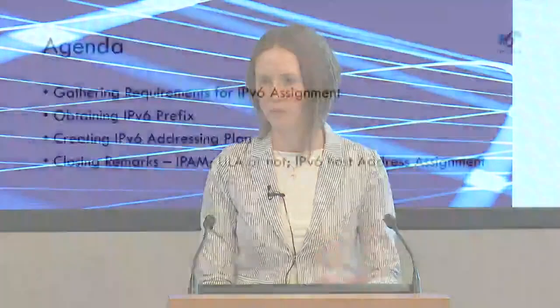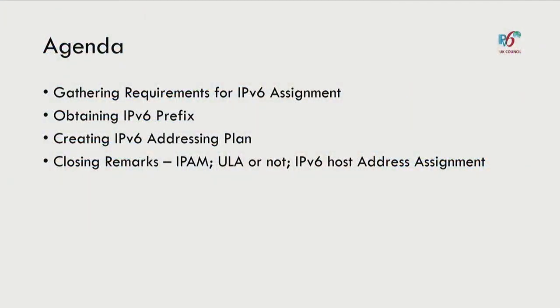So, address planning. Besides retraining your staff — one of the first things you need to think about — for your deployment or even the pilot, you need to allocate or assign some addresses. This talk is only 30 minutes. I used to do a Cisco Live presentation that was 90 minutes with an exercise for over 300 people. In this one I'd like to cover: how do you know what size of IPv6 assignment you need, how do you obtain an IPv6 prefix, and how do you create an IPv6 addressing plan?